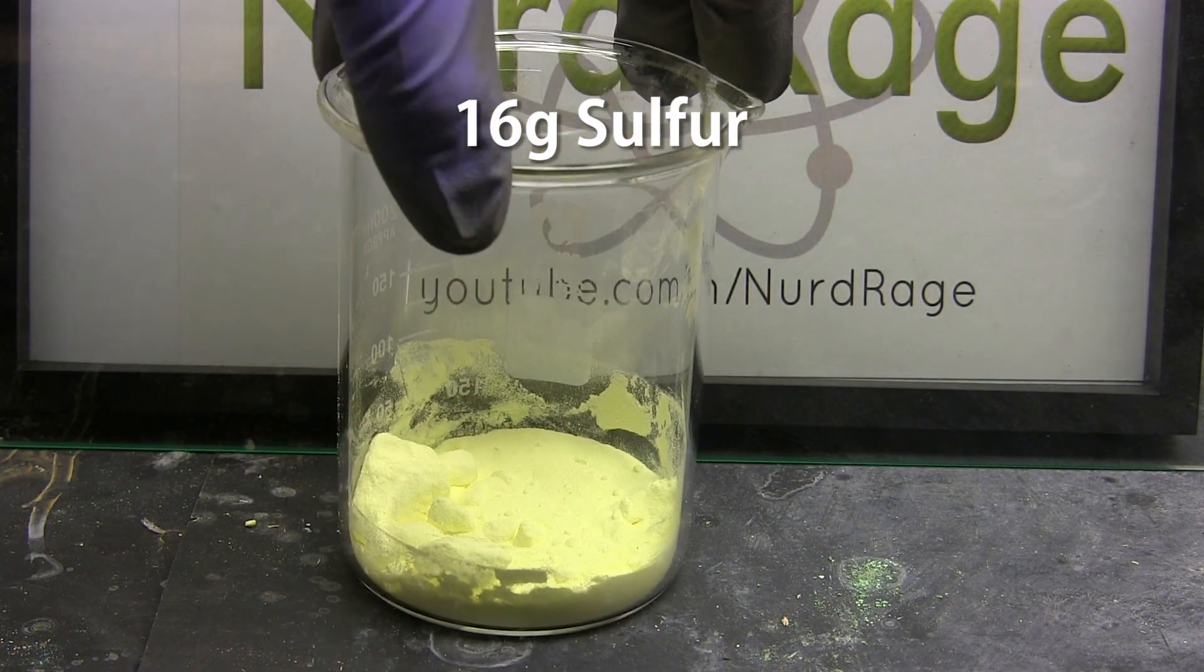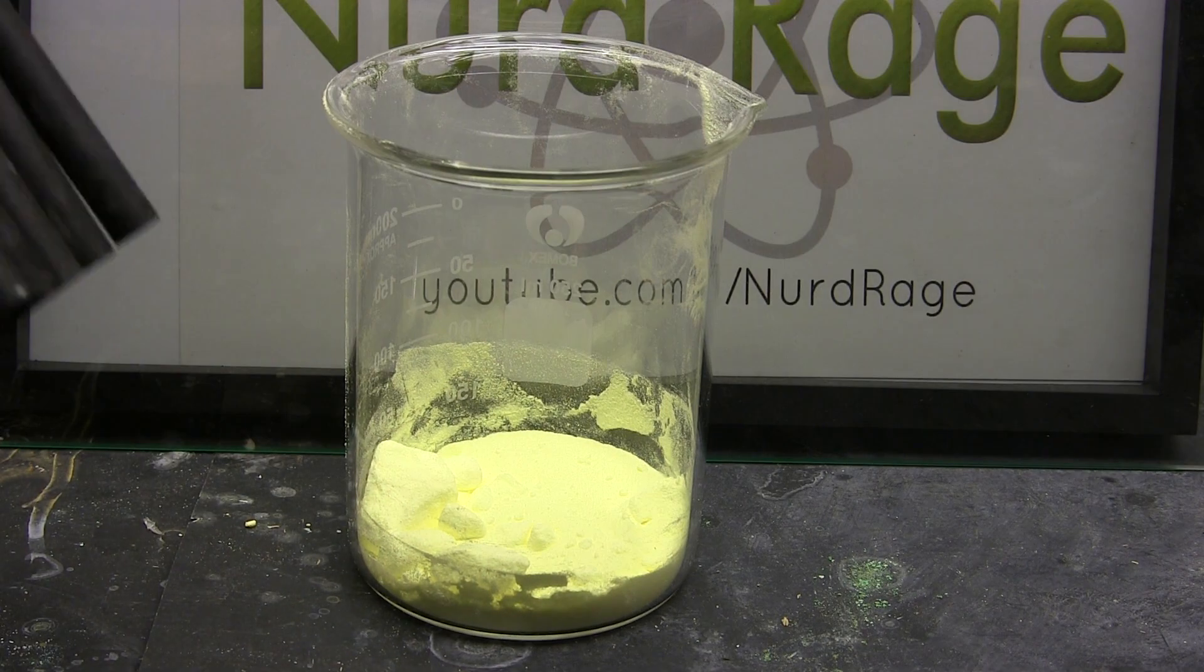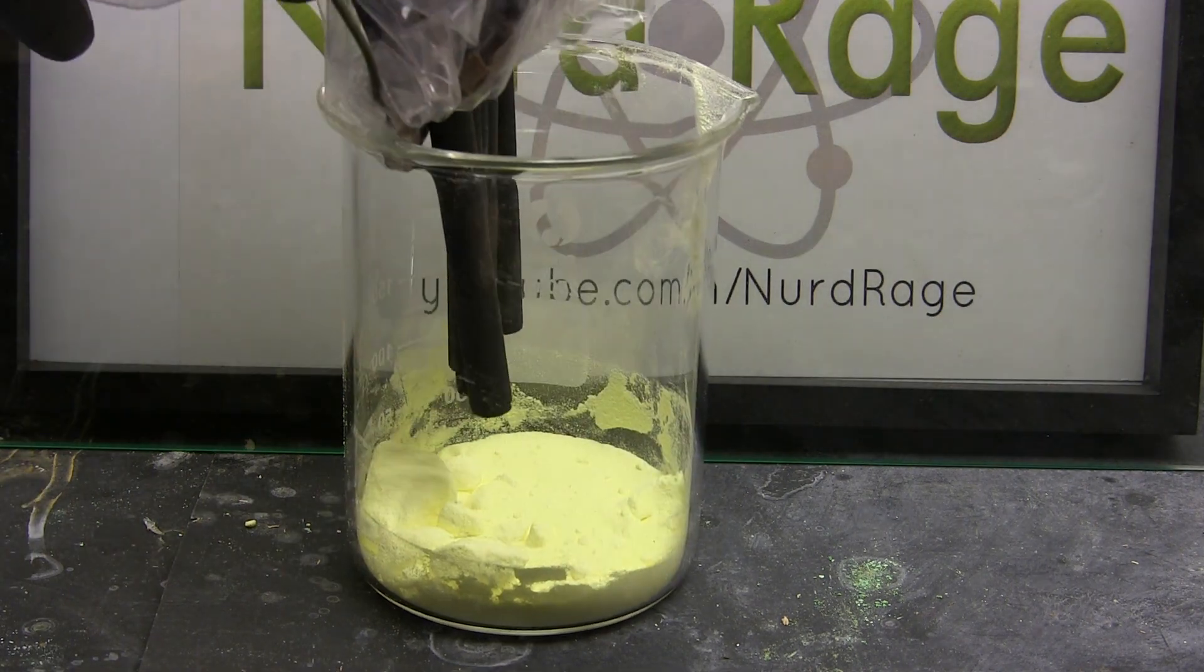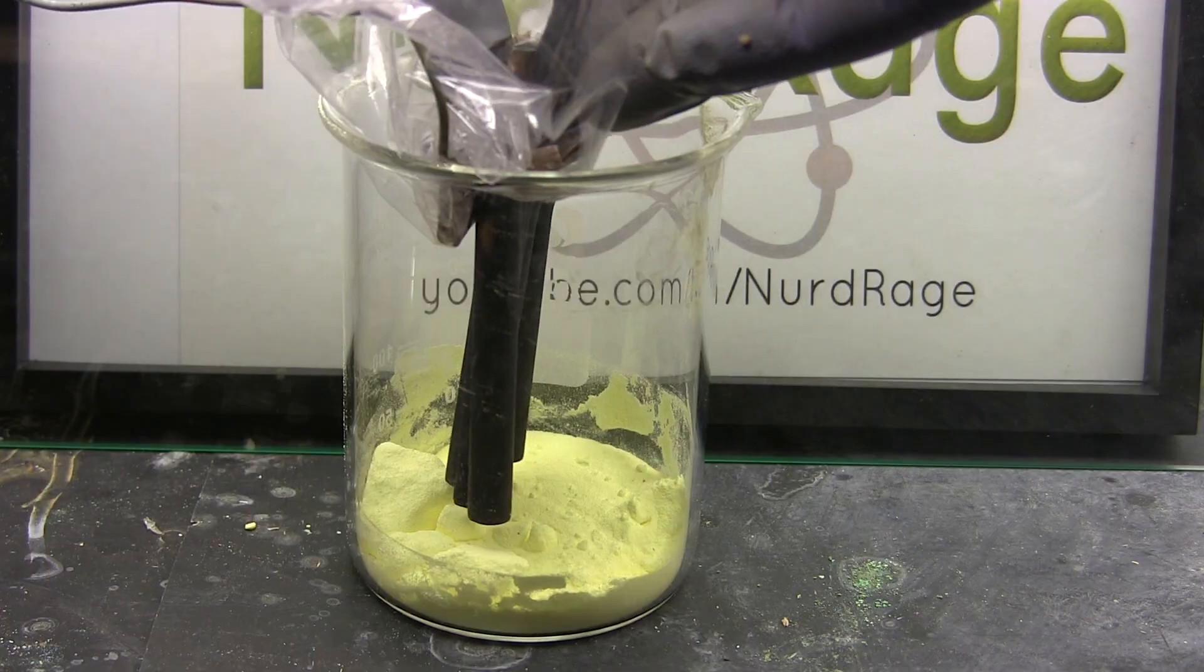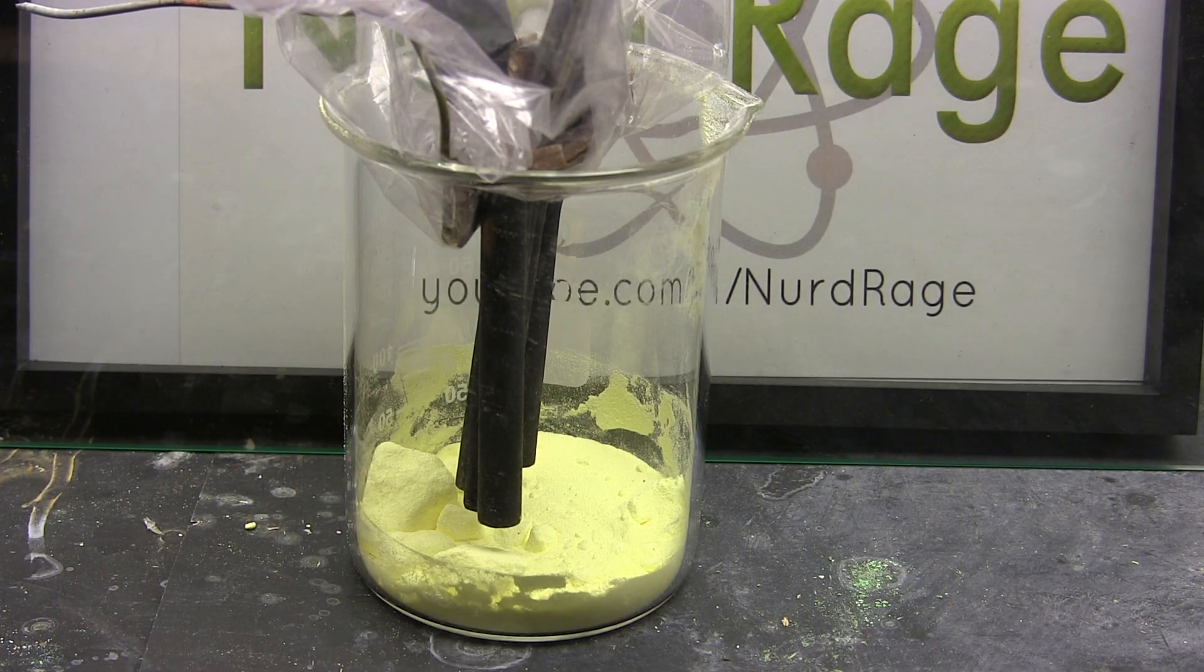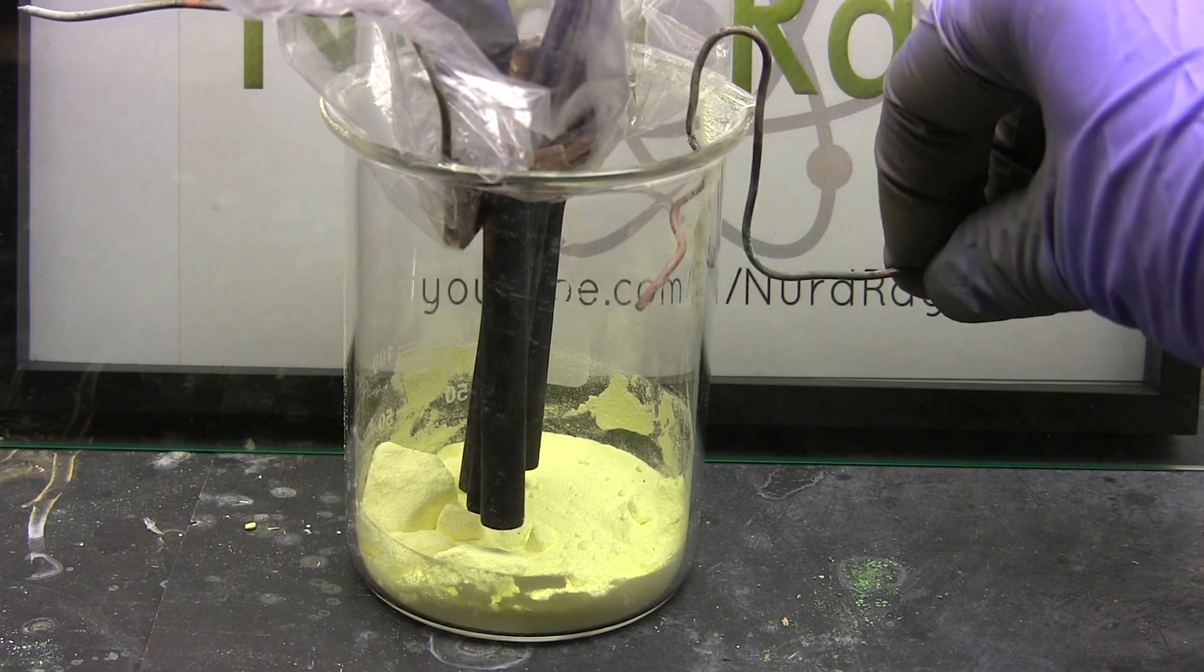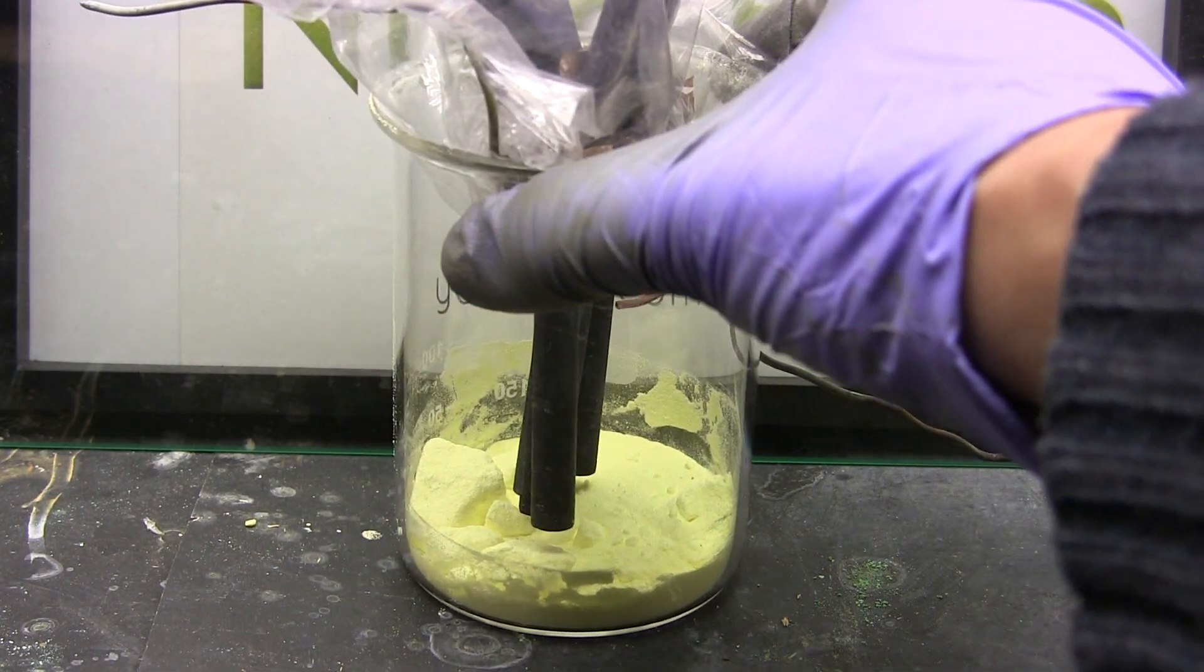First we start with about 16 grams of sulfur in a 250 milliliter beaker. Next we insert a carbon electrode we'll use for the anode. I'm using a carbon raft electrode consisting of 5 carbon rods obtained from lantern batteries. For the cathode we'll be using some copper wire. It's meant to be close to the surface as we don't want it submerged too deep. I'll explain why later.